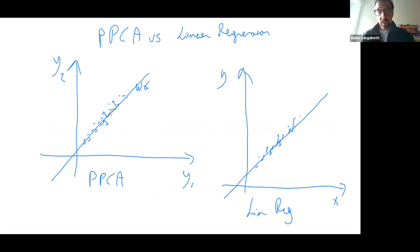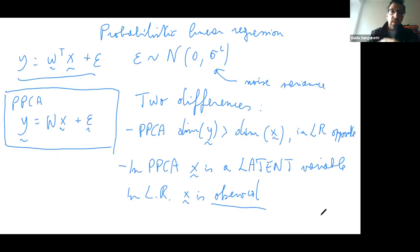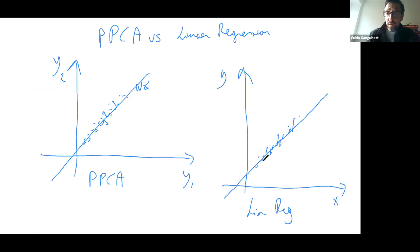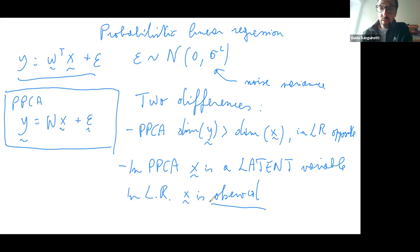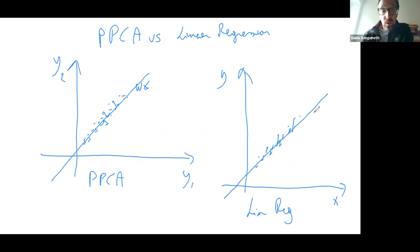The reason errors go only in the vertical direction in linear regression is that x values are precisely observed — there is no noise whatsoever on x. If you have uncertainties on input variables, you cannot use linear regression. What you need to do is consider the joint variability in both y and x and do a probabilistic PCA instead.